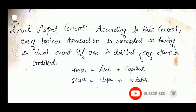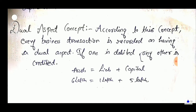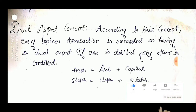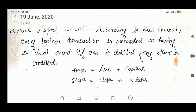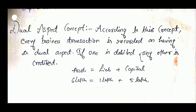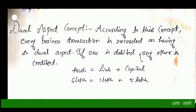Our first principle is the Dual Aspect Concept. The word 'dual' means you will have two effects. For example, if you purchase machinery, you will have one effect — the machine comes in — and the other effect is cash outflow. If you purchase a book, your account gets the book and in return you give money. According to this concept, every business transaction is recorded as having a dual aspect.